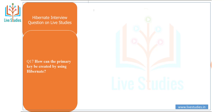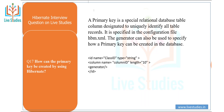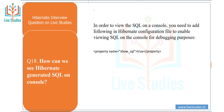Another question: how can a primary key be created using Hibernate? A primary key is a special relational database table column designated to uniquely identify all table records. It is specified in the configuration file — hbm.xml. The generator element can also be used to specify how a primary key can be created in the database, for example using id name, column name, and generator class attributes.